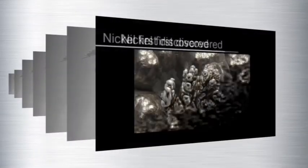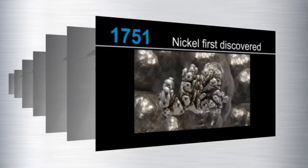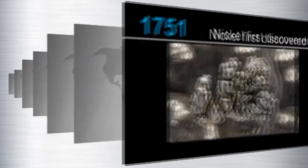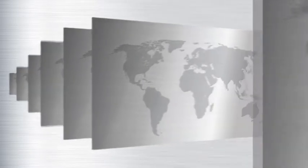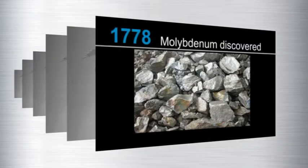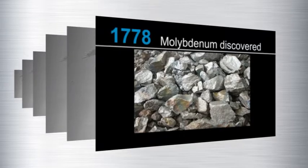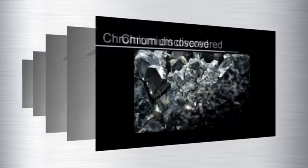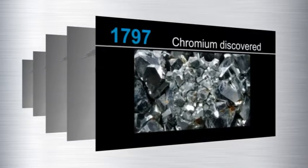The key elements — nickel, molybdenum, and chromium — which eventually enabled the development of the range of materials we now know as stainless steels, were all discovered in the second half of the 18th century.